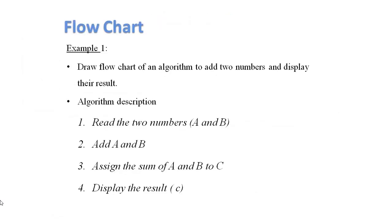For example, draw a flowchart of an algorithm to add two numbers and display the result. First, we have the algorithm description. Step one: read the two numbers A and B (input-output symbol). Step two: assign the sum of A and B to C, where C equals A plus B (processing symbol). Step three: display the result C (input-output symbol).